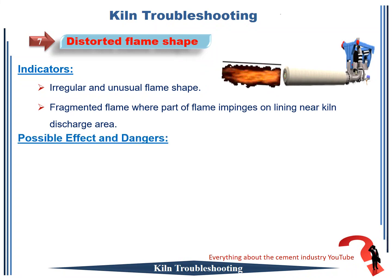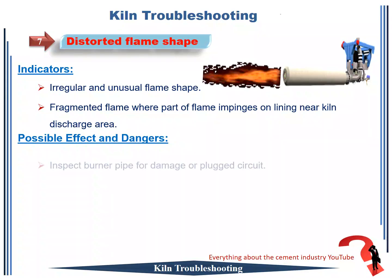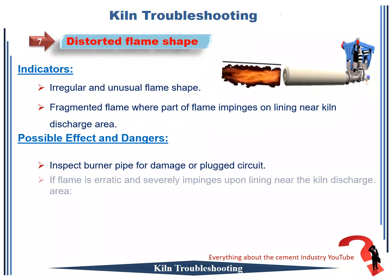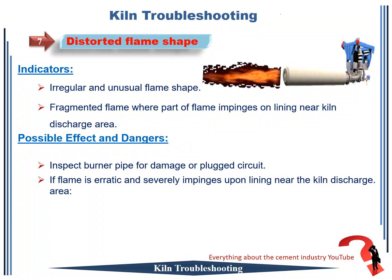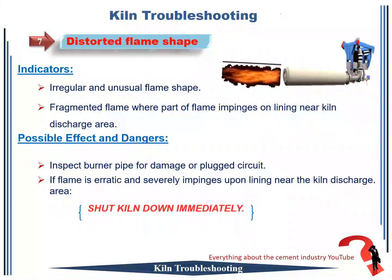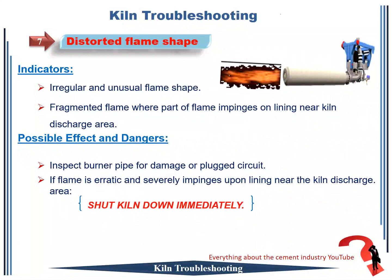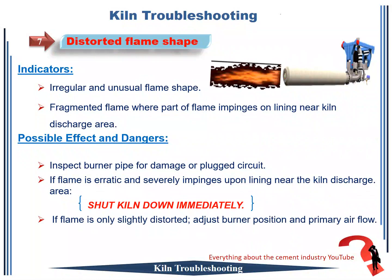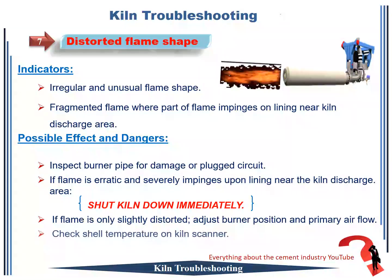Possible effects and dangers that occur in this case. First, inspect burner pipe for damage or plugged circuit. Secondly, if flame is erratic and severely impinges upon lining near the kiln discharge area, shut kiln down immediately. Thirdly, if flame is only slightly distorted, adjust burner position and primary air flow.